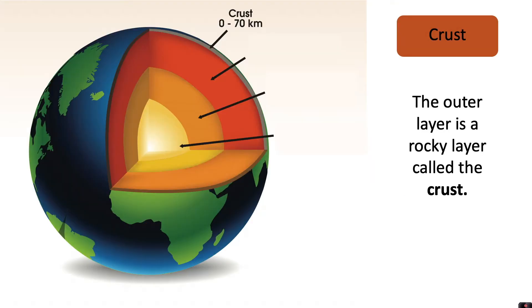In this video we're going to look at the structure of the Earth. The outer layer is a rocky layer called the crust and it's approximately 70 kilometres deep. The crust is the layer we know most about because that is the layer at the surface and it is easiest to study.